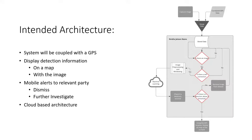If there is a detection in the system, the image will be kept and the information will be uploaded to be shown on a map of the orchard, with a notification sent to the person monitoring the system. The person receiving this image can then review it to either dismiss it or take further action. This online system means that all the data is accessible from anywhere in the world.